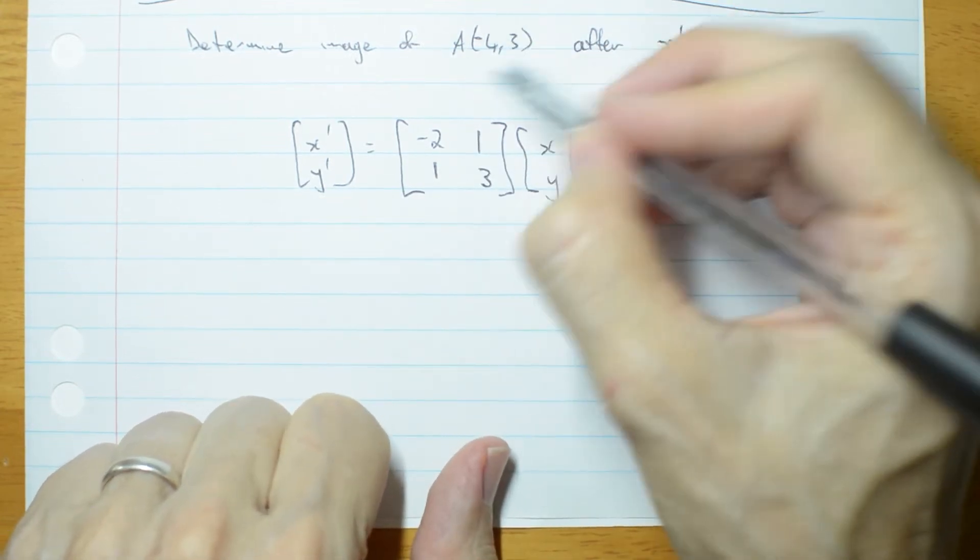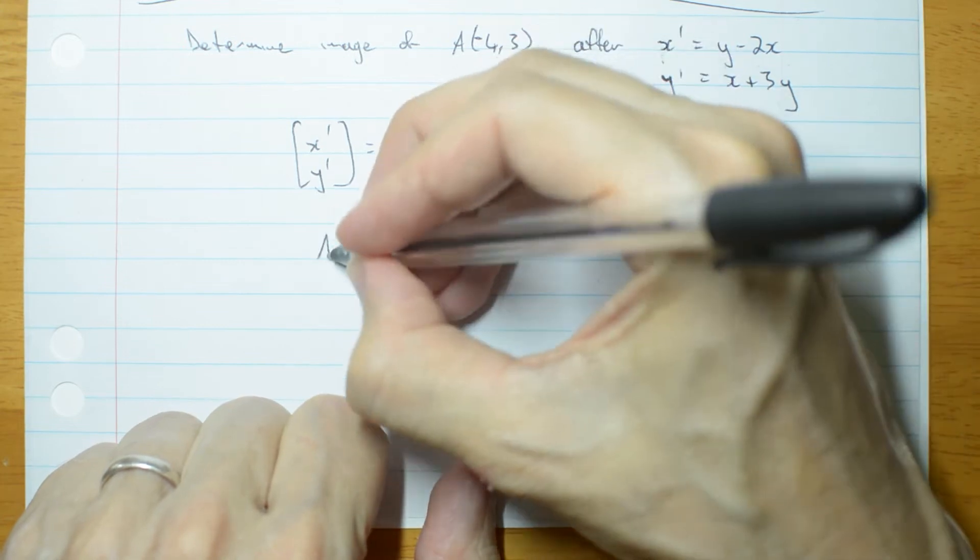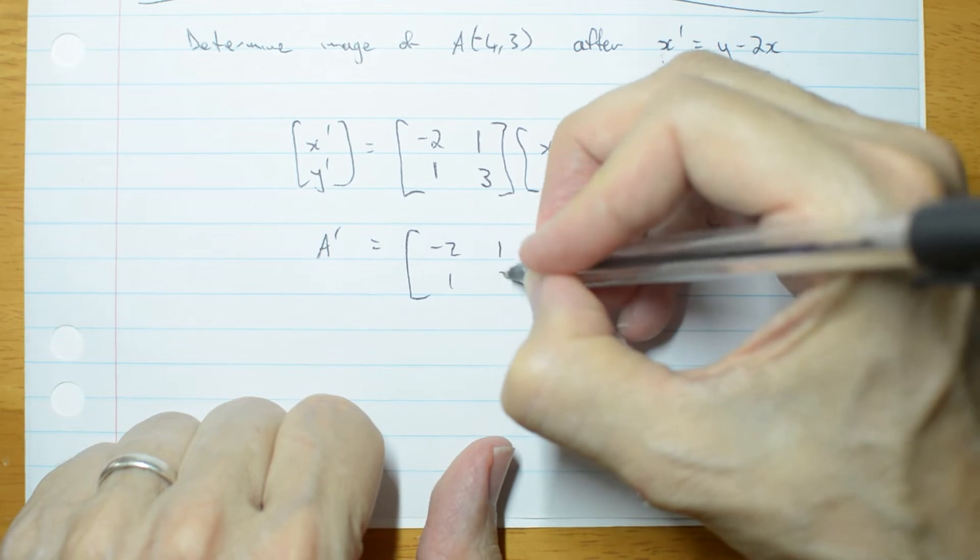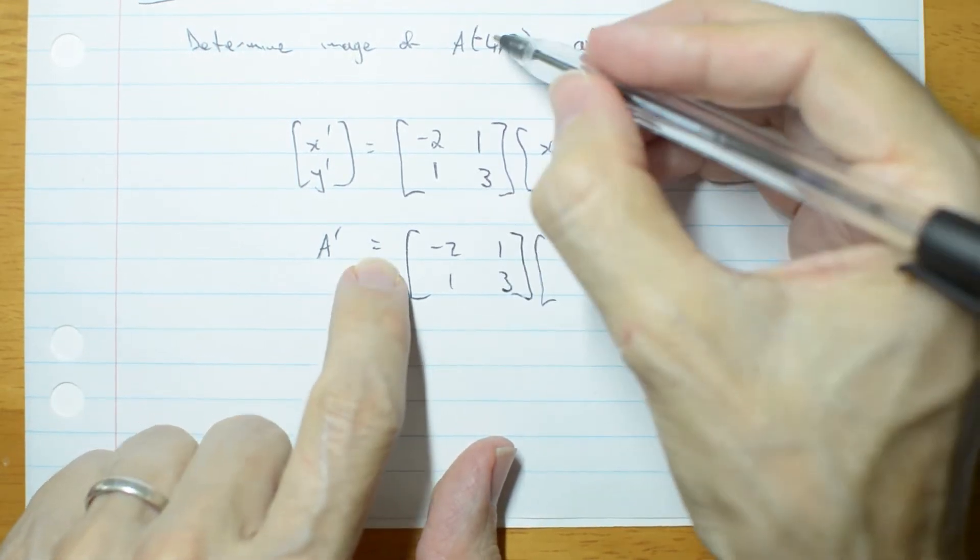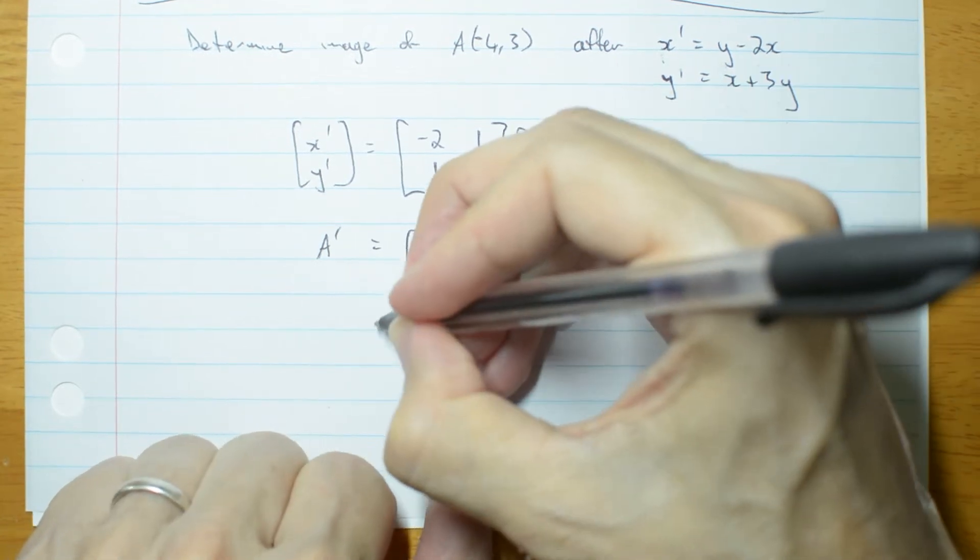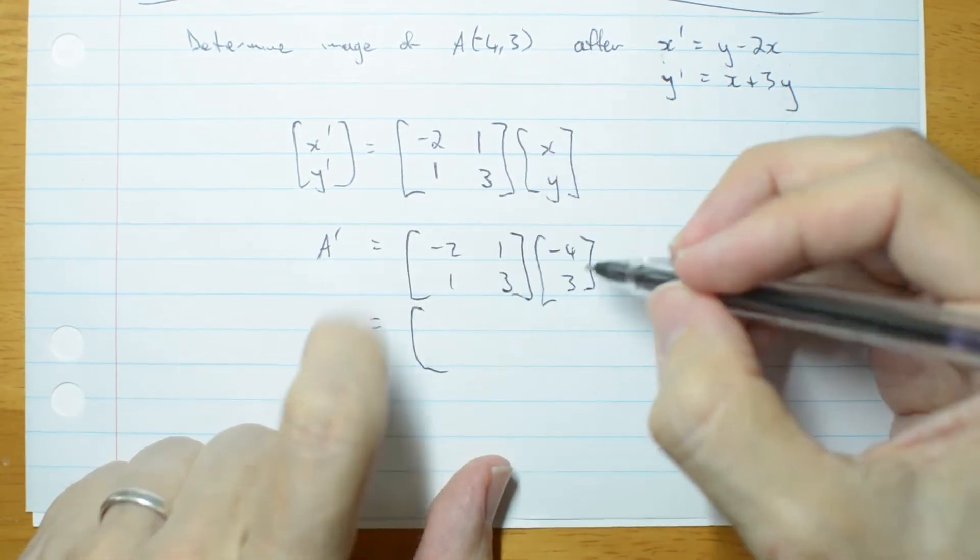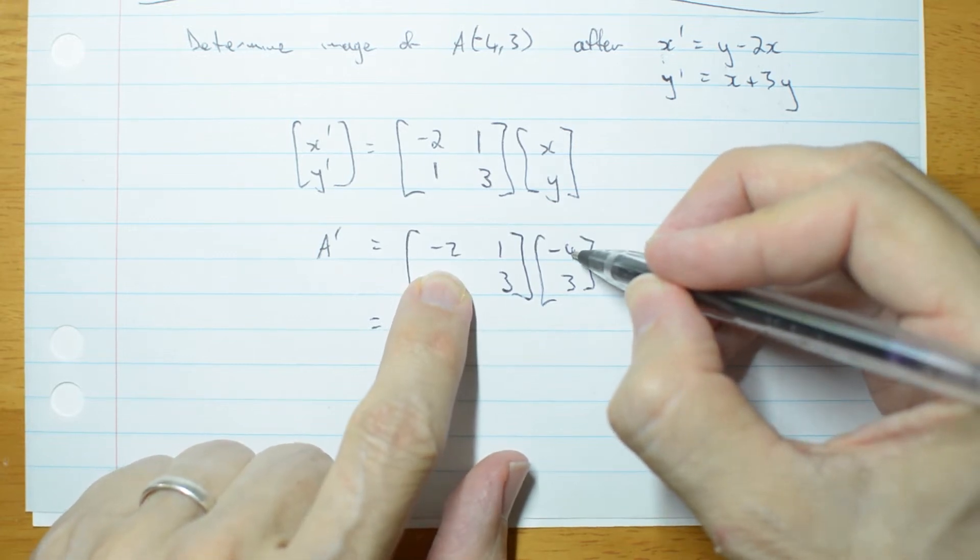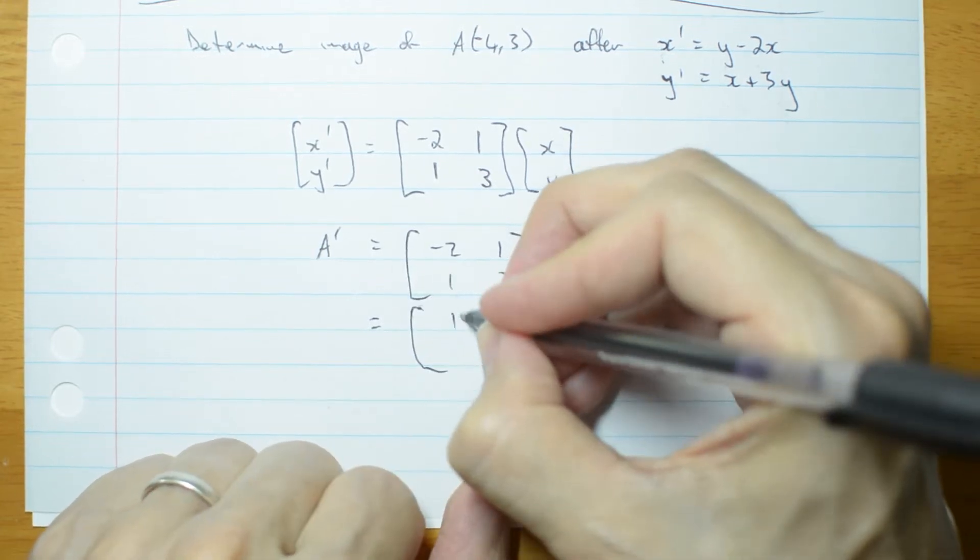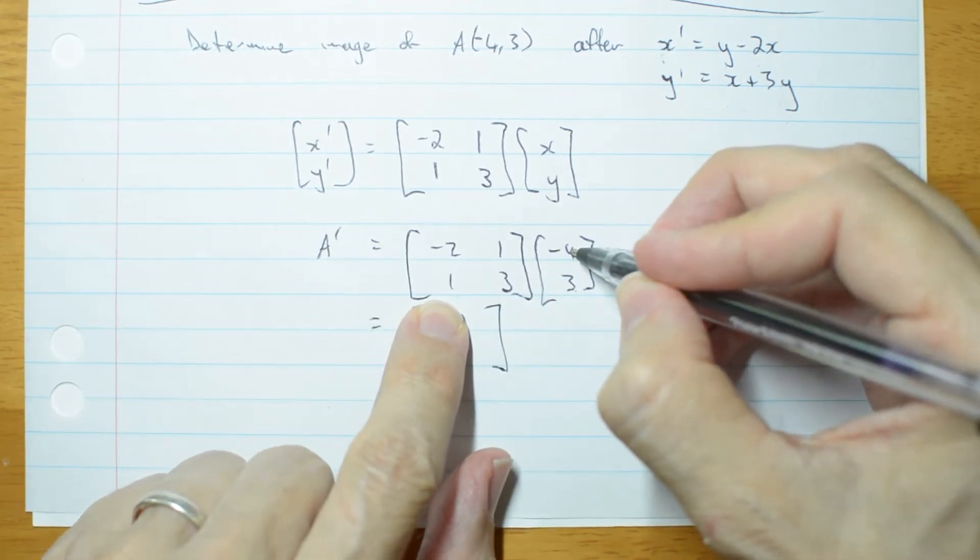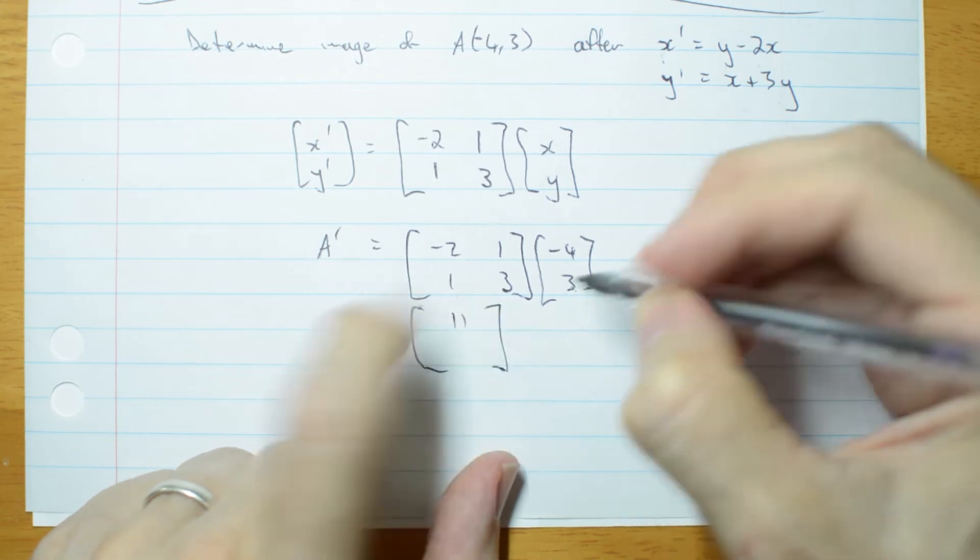So if I now have a point I can go, A primed is going to be [-2, 1; 1, 3] times A's original coordinates -4 and 3. And that's going to give me the new x coordinate for A is going to be 8 plus 3 is 11, and the new y coordinate is going to be -4 plus 9 which is 5.